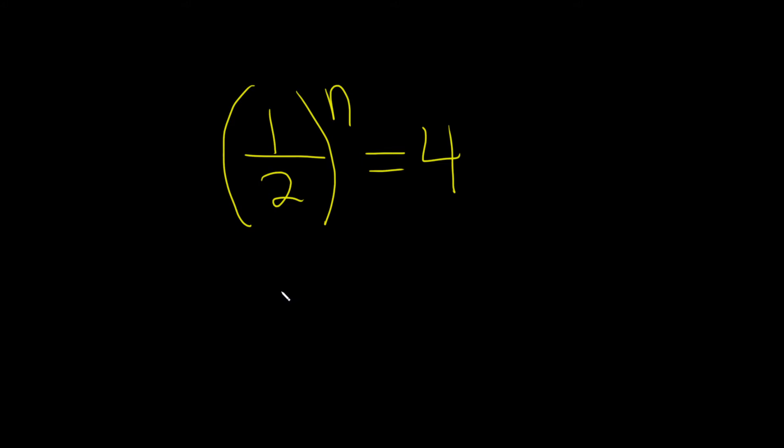So our goal is to write both sides using the same base. So here you see a 1 half, so you're thinking maybe 1 half is the way to go. However, here we have a 4, and we know that 4 is 2 squared. So let's try to use 2 as our base, and here's how.